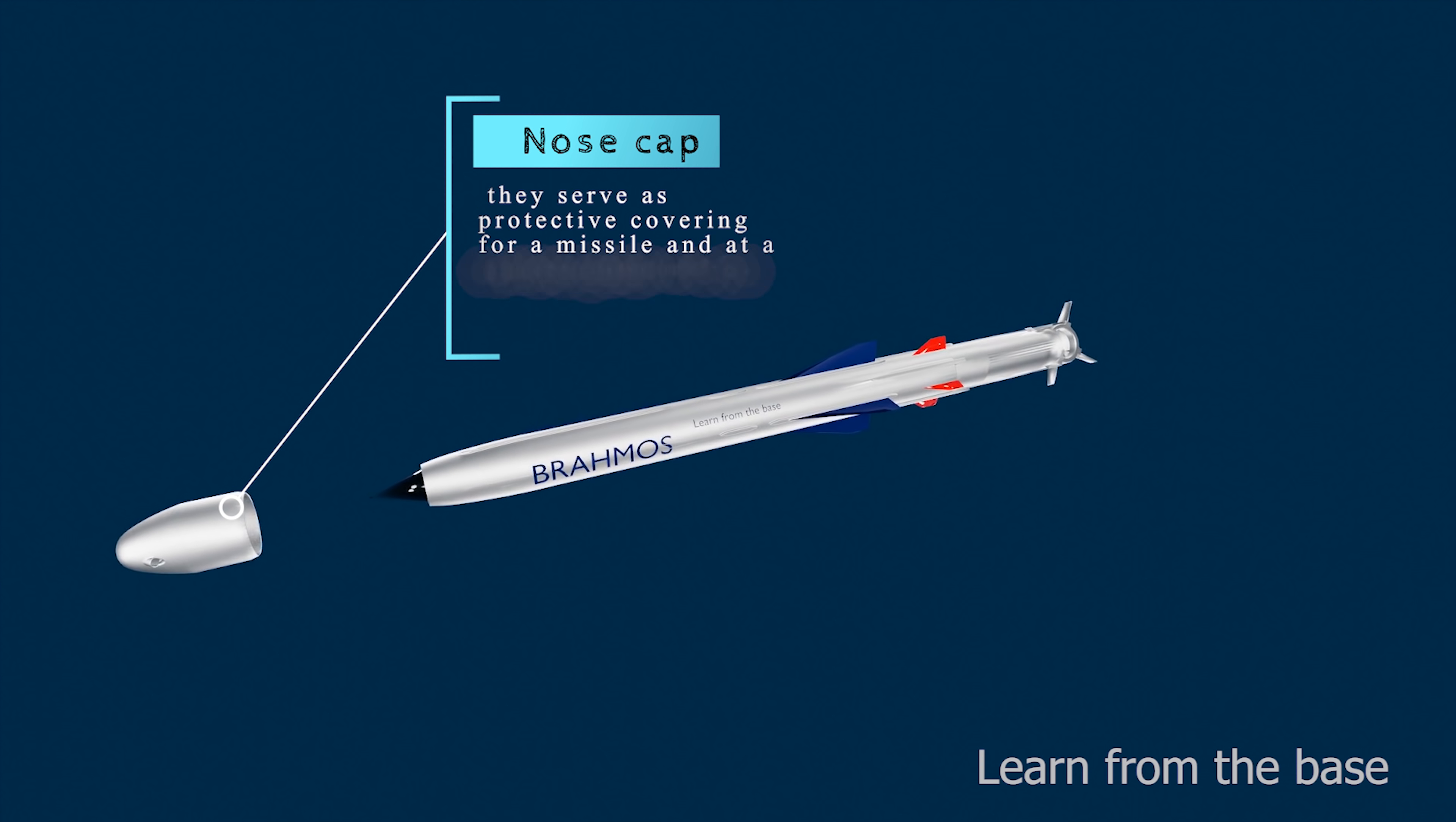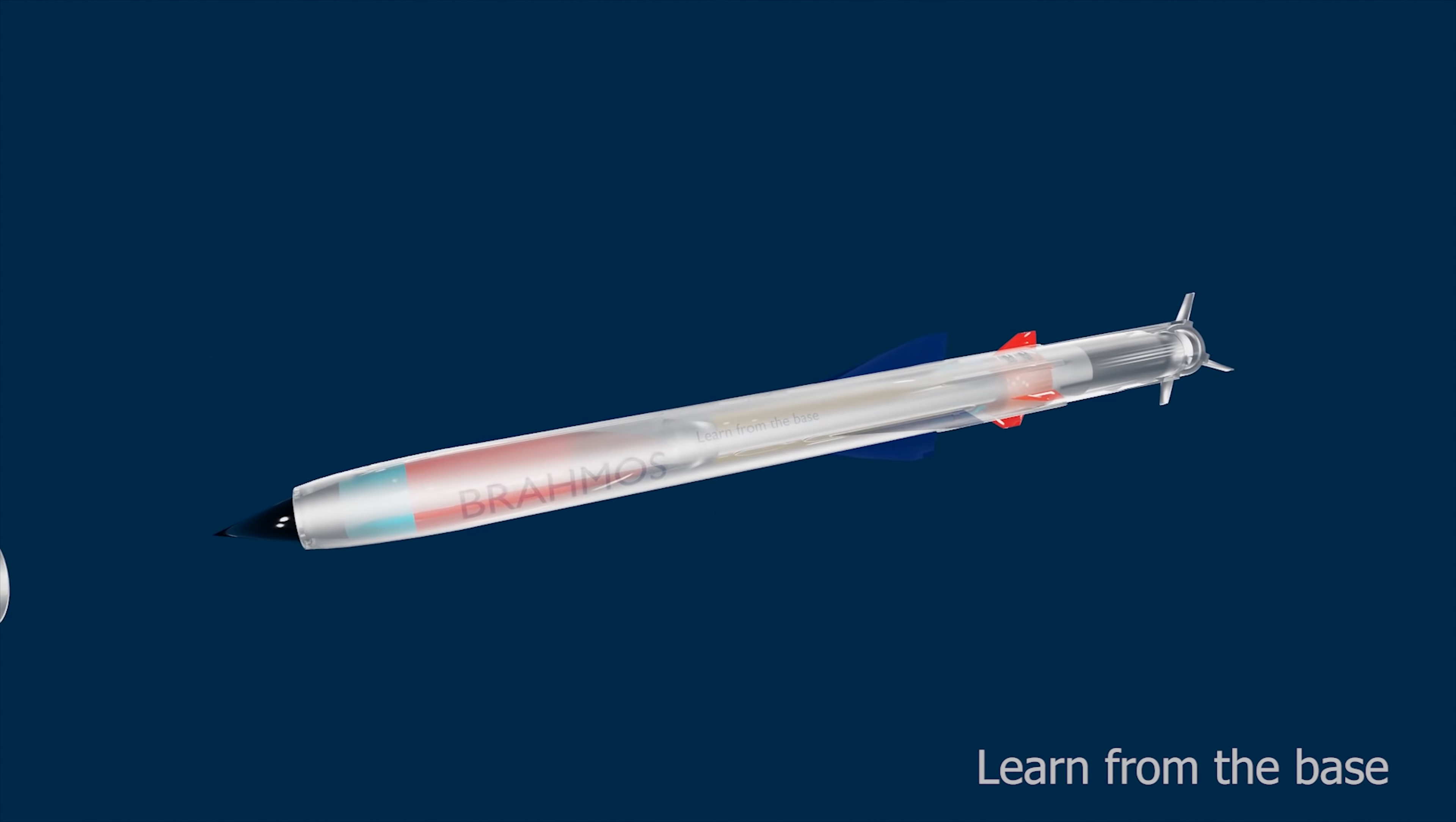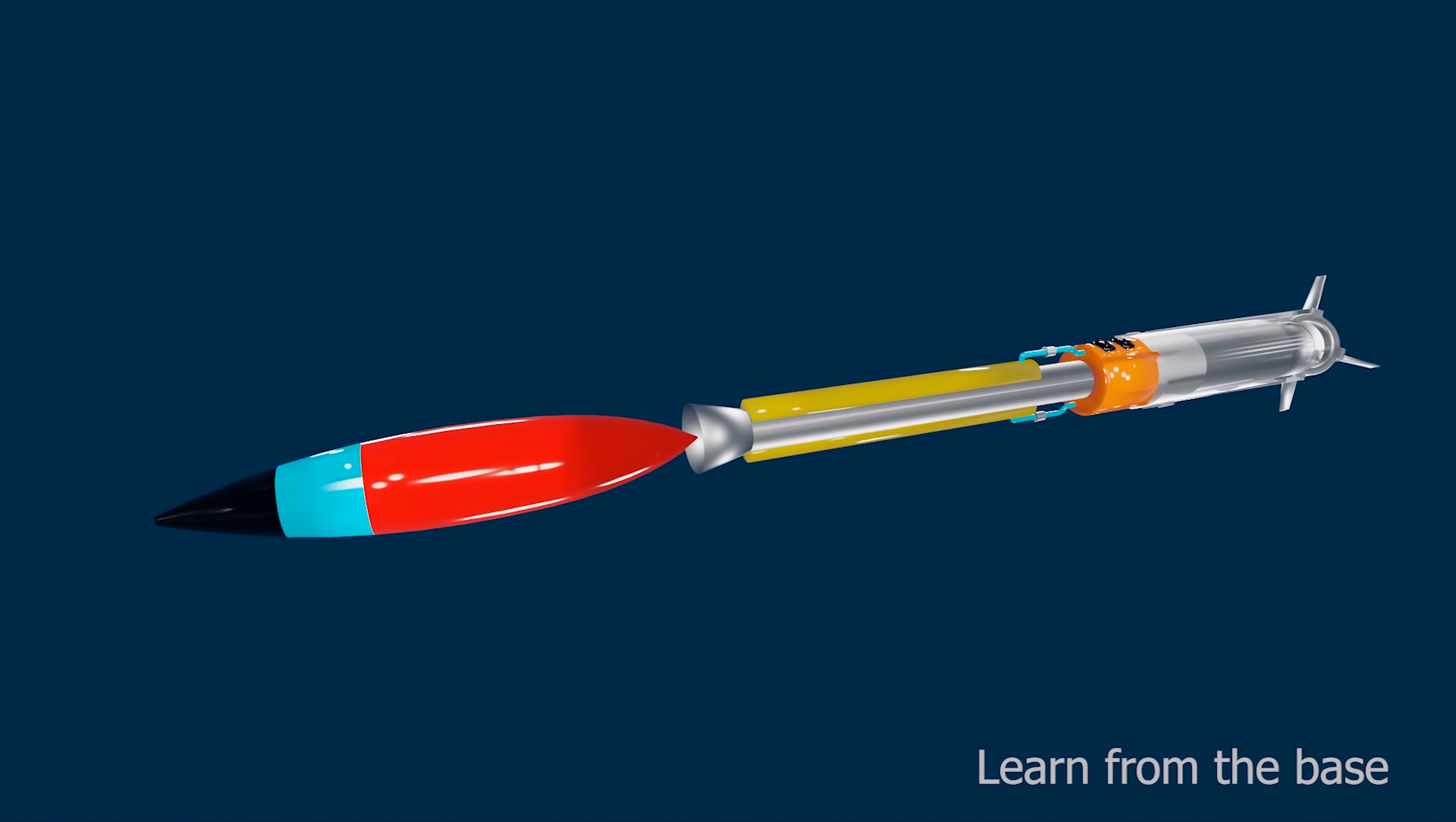This is the nose cap of the missile. It serves as protective covering for the missile, and at a certain point it's no longer needed. Let's take a look inside the missile and explore each part.